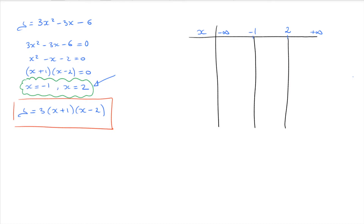Looking at the root-factored form, the first factor is x plus 1. We write that in our table and study its sign. x plus 1 equals zero when x equals negative 1, so we write 0 below negative 1. For x values less than negative 1, x plus 1 is negative, so we add a negative symbol to the left. For all x values greater than negative 1, it's positive, so we add plus and plus to the right.